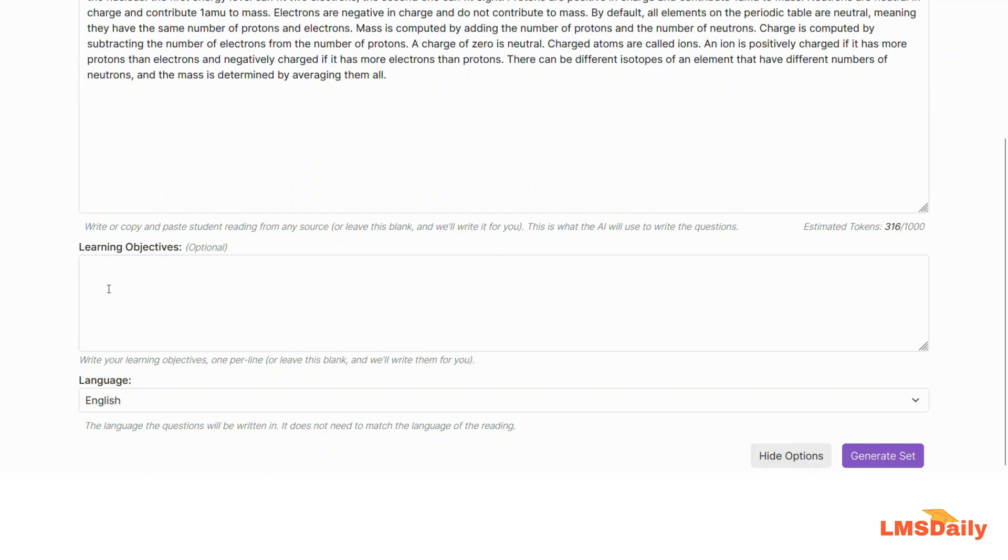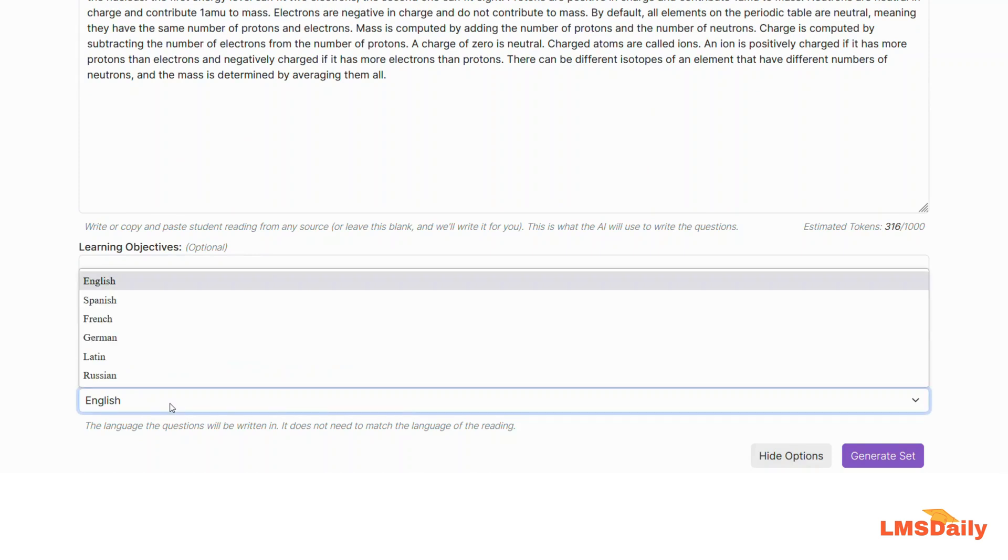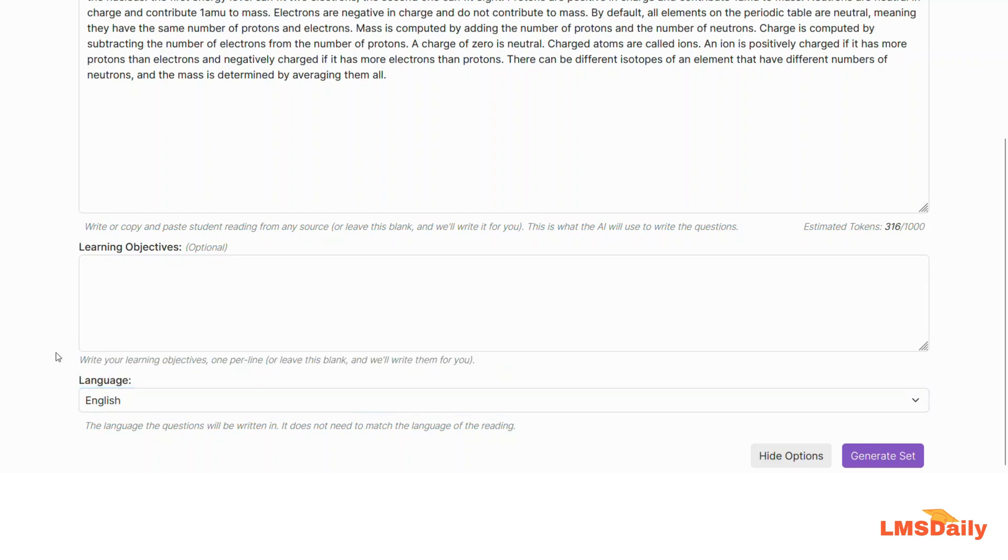In the learning objectives field, you can add your objectives, and in the next field, choose the language. As of now, this app includes six different languages: English, Spanish, French, German, Latin, and Russian. You can choose any language to create your questions.